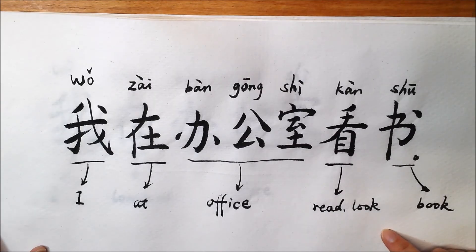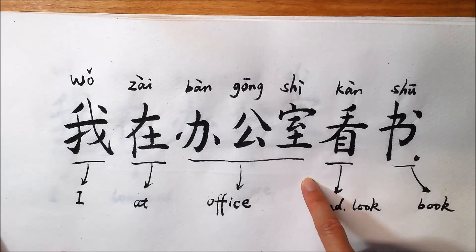Zai also works as a preposition. It can mean at, on, or in, such as 我在办公室看书。